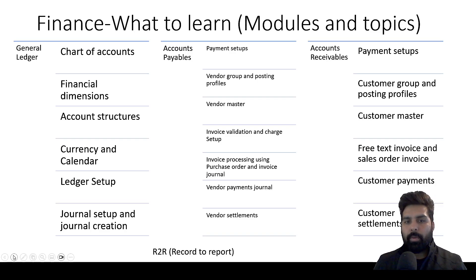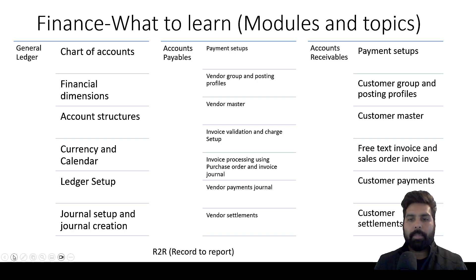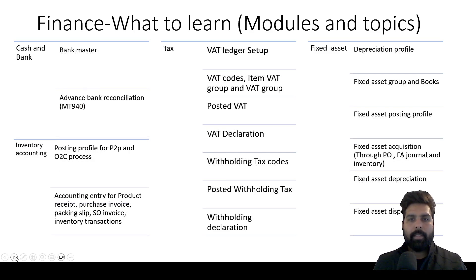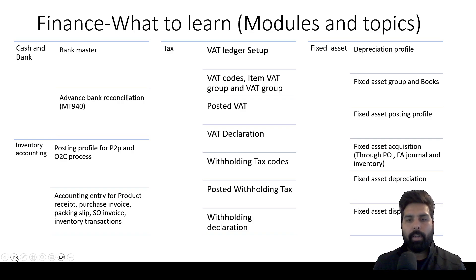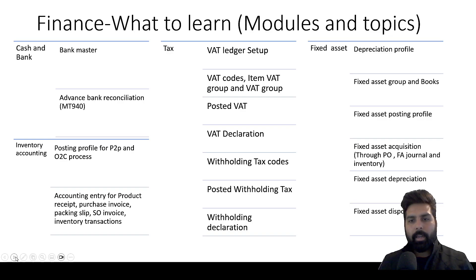One of the major finance processes people talk about is R2R — Record to Report — which is your journal ledger processing and reporting. Apart from that, you should also learn Cash and Bank: at minimum, how your cash and bank master is created and advanced bank reconciliation with at least the MT940 file format. You also need to understand inventory accounting — how posting profiles for the Procure-to-Pay and Order-to-Cash processes are set up — meaning what accounting entries get posted when a product receipt or purchase invoice is posted.